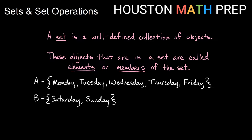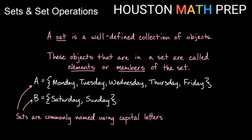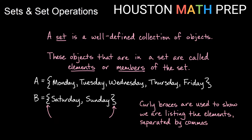So here I've got two sets. I've got a set called A and a set called B. It's very common that we name sets using capital letters, usually starting at the beginning of the alphabet, but we can really start anywhere we want. Usually capital letters are used to denote sets so that we can refer to them easily and not have to write out an entire description to refer to the set. So if I just say set A, you know I'm talking about weekdays, and if I say set B, you know I'm talking about weekends without me having to write that out or describe it fully.